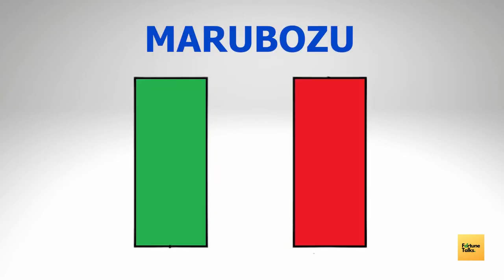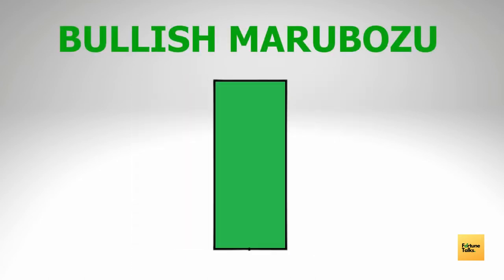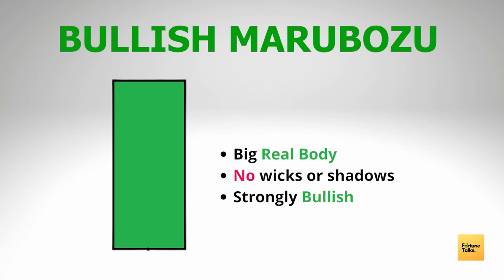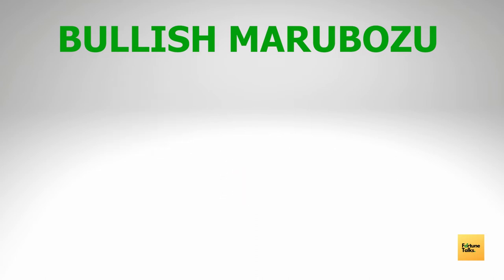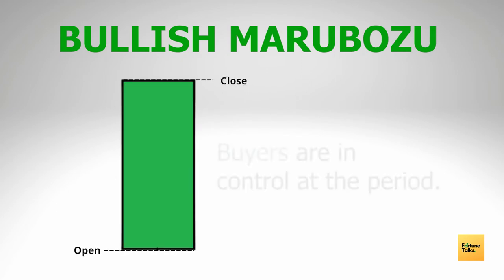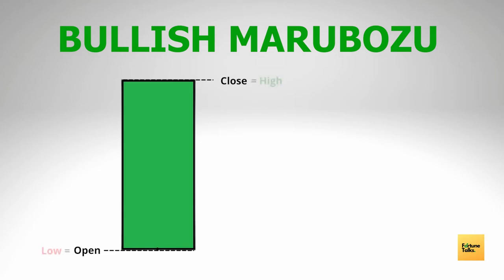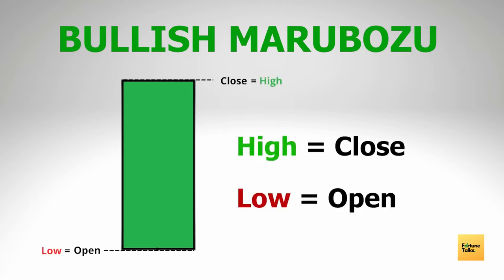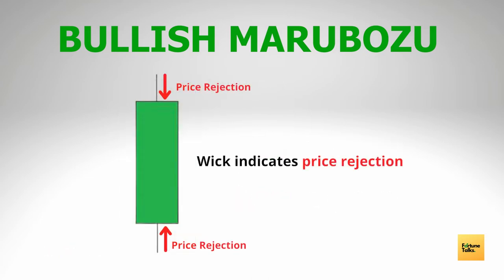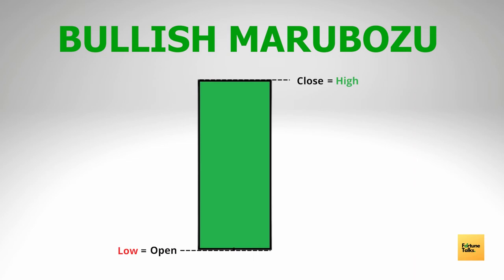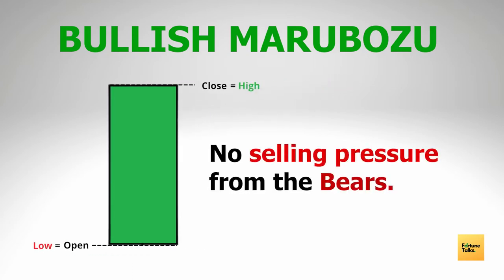Let's start with the first category of candlesticks, called Marubozu. The first type is a bullish Marubozu — a green candle with a big real body but no wicks or shadows on either end. The longer the real body, the more bullish the candle. Since it is a bullish candle, the closing price is greater than the opening price. Since there are no wicks on either side, the high and low prices coincide with the close and open prices respectively. The wick of a candle indicates price rejection by the opposite party.